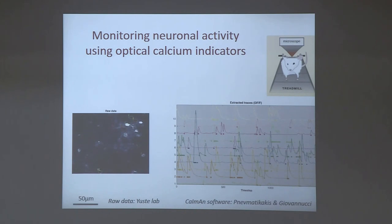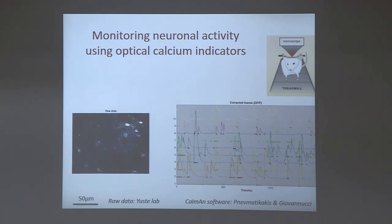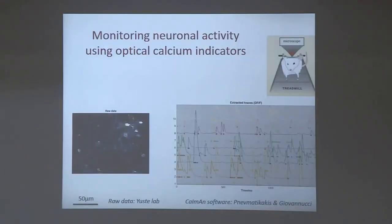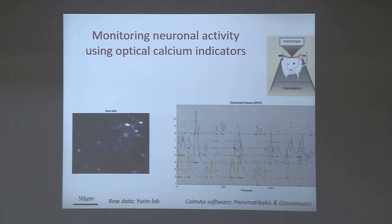Depending on your question, you may be able to answer it from just the calcium transients. For the purposes of this talk, I will characterize neuronal activity just with the firing rate — simply the number of spikes per second. One of the central questions in neuroscience right now is: what is the right way to think about this neuronal population activity? What does it really represent?